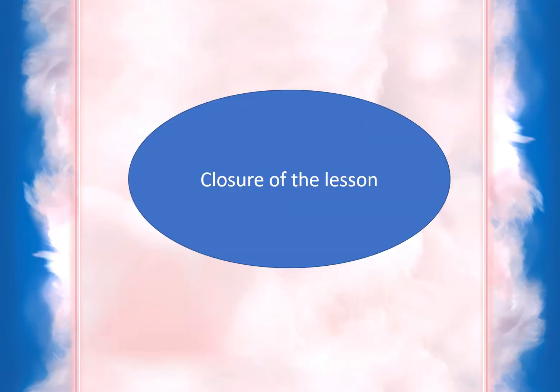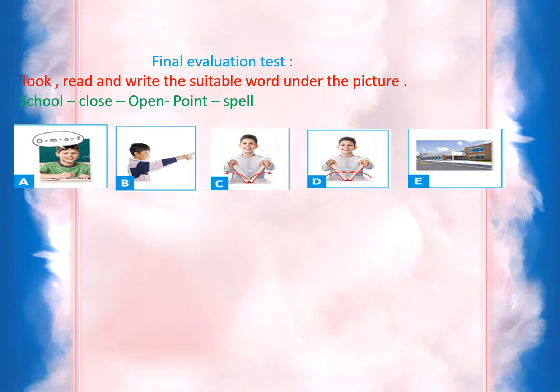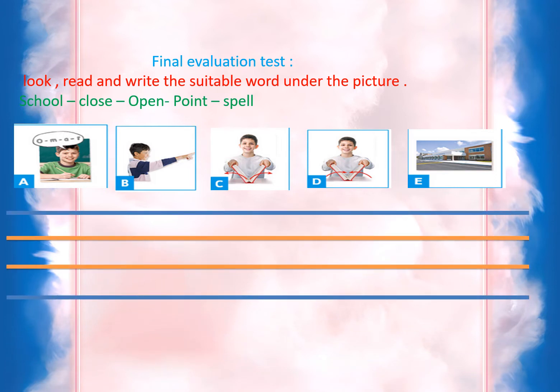Now we come to the closure of the lesson. Read and write the suitable word under the picture. Picture number one — yes. Spell. Number two — yes, point. Very good. Number three — open your book. Number four — close your book. The last picture — school.